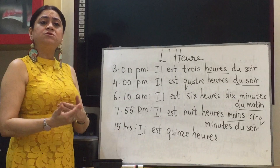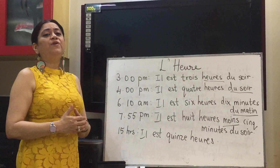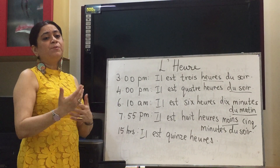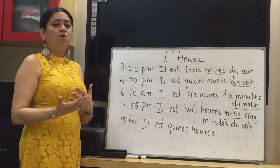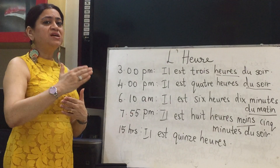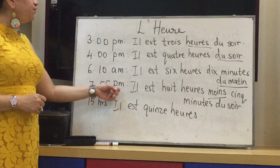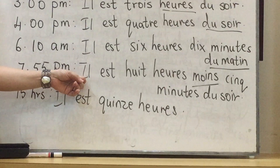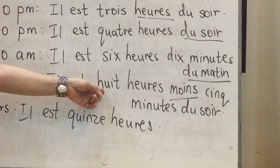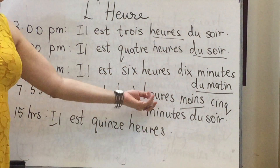If it is 7:35, you can write it as 'sept heures trente-cinq minutes.' And if you are close to the next hour — say about 20, 10, or 5 minutes away — you can complete the next hour and use 'moins' with the remaining minutes. So 7:55 P.M. can be said as 'il est huit heures moins cinq minutes du soir.'